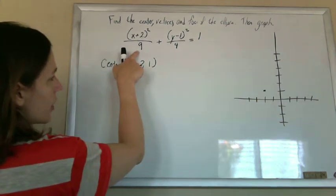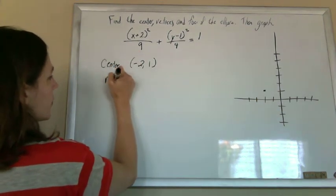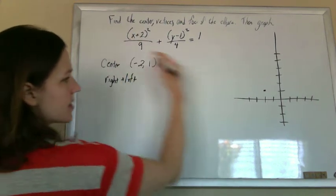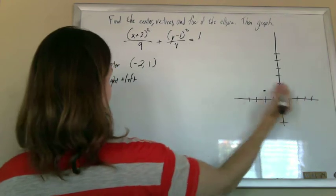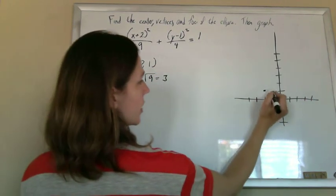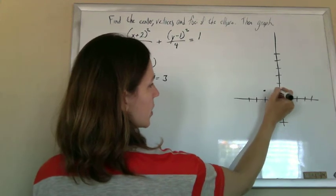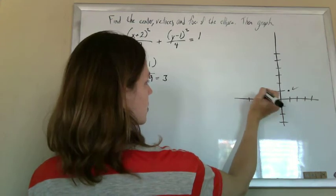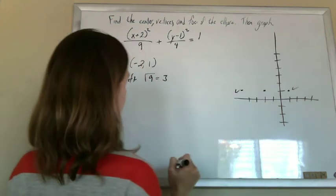And then I'm going to go right and left. And I know I'm going right and left because it's underneath the x. So x controls my right and left movement. So I'm going to go right and left the square root of 9, which is 3. So from my center, I go 1, 2, 3 to the right, and there's a vertex. And 1, 2, 3 to the left, and that's another vertex.